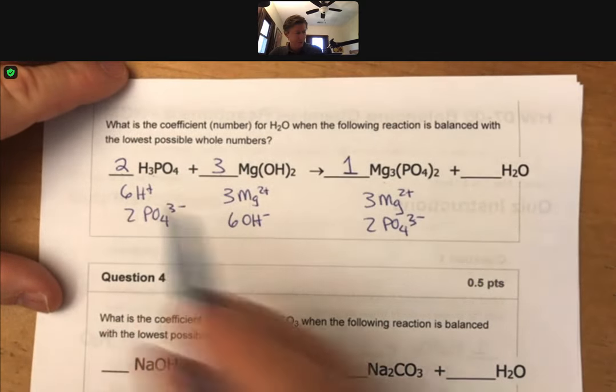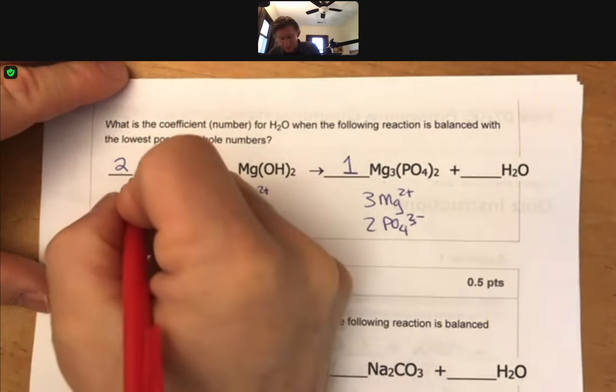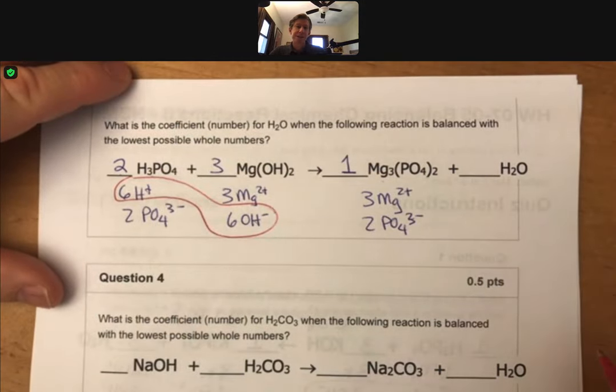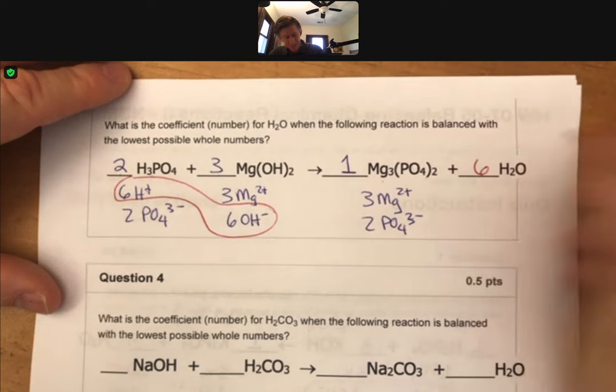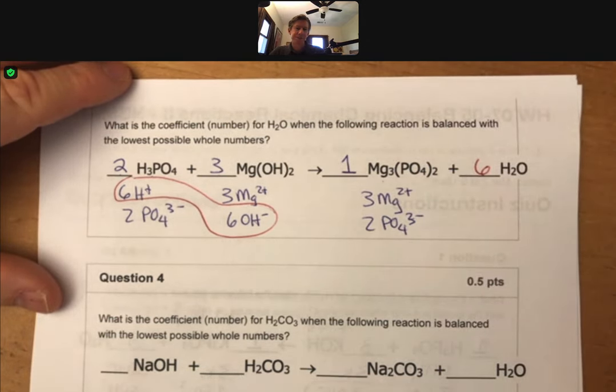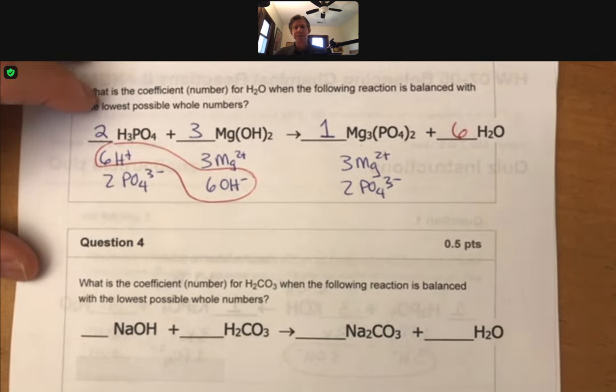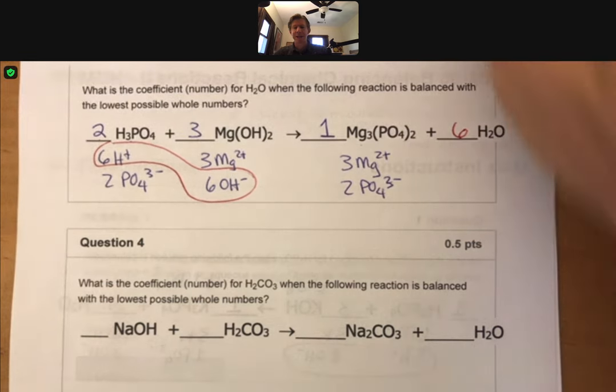And so just like we did in the last example, we are going to need six waters to balance everything else. Let's stick with those two and give you attempts on the other ones. And if you have any questions, you can always ask.